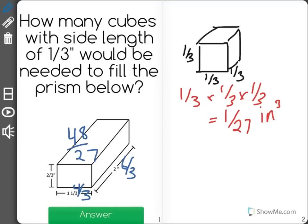How many of the little cube goes into the big cube? So we're dividing 48-twenty-seventh over one-twenty-seventh. And the twenty-sevenths cancel out here. And so all we're left with is 48 cubes.